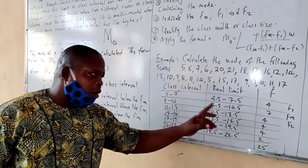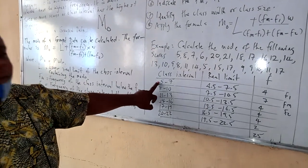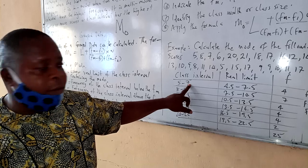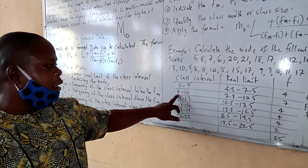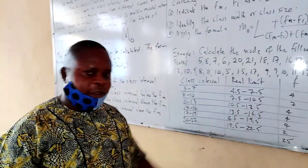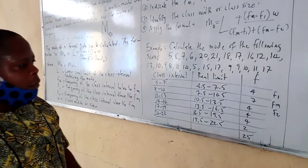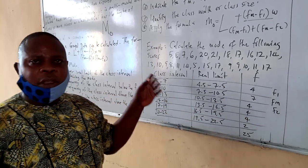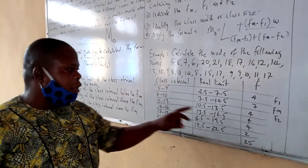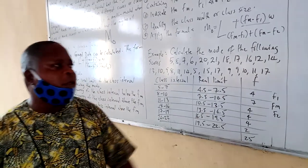In the second column, arrange the true, real, or exact class limits. Subtract 0.5 from the lower class boundary — for 5–7 it becomes 4.5 to 7.5, for 8–10 it becomes 7.5 to 10.5, and so on for all class intervals. The frequencies show how many times scores in each class interval occur: 5–7 appears 4 times, 8–10 appears 7 times, 11–13 appears 4 times, 14–16 appears 4 times, 17–19 appears 4 times, and 20–22 appears twice. The total is 25.